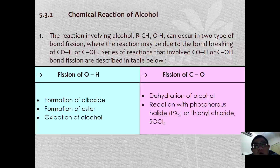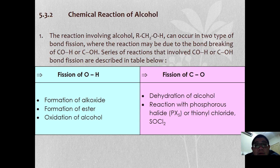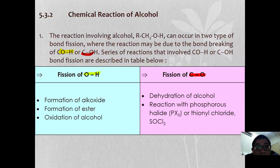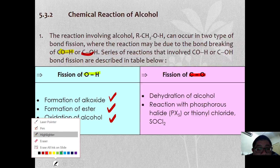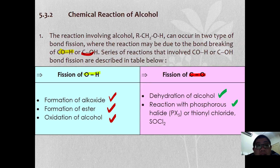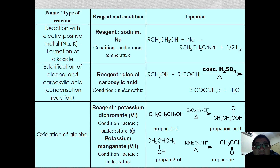Next we are going to look at the chemical reactions of alcohol. The reactions involving alcohol can be generally grouped into two types: fission of O-H, and fission of C-O. The fission of O-H includes formation of alkoxide, ester, and oxidation of alcohol, whereas fission of C-O covers dehydration of alcohol and reaction with phosphorus halide.